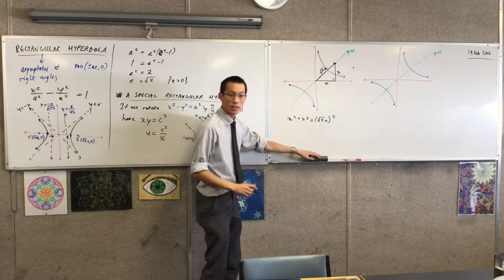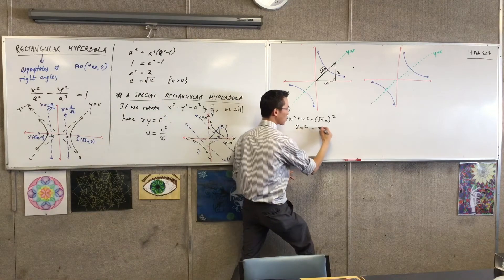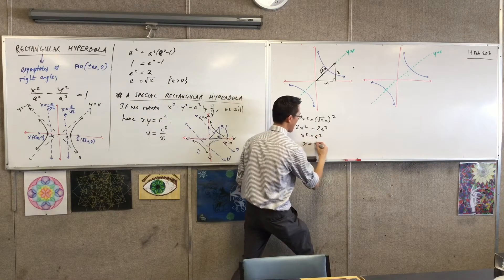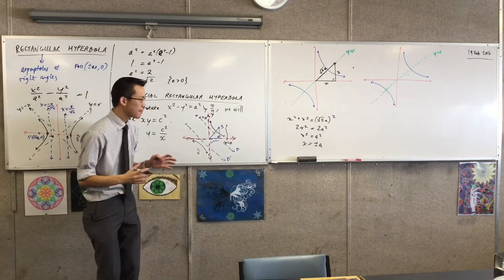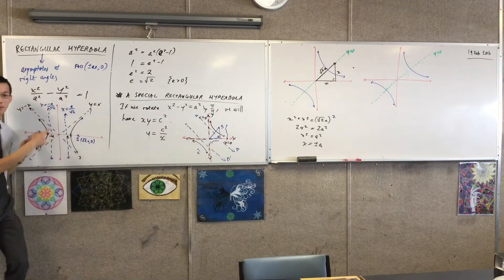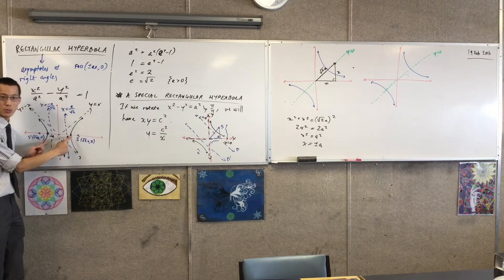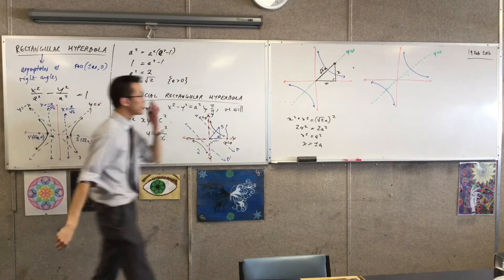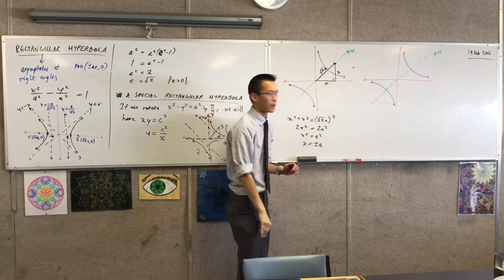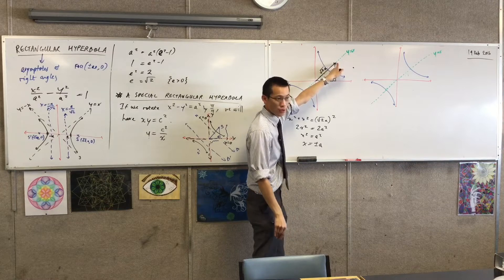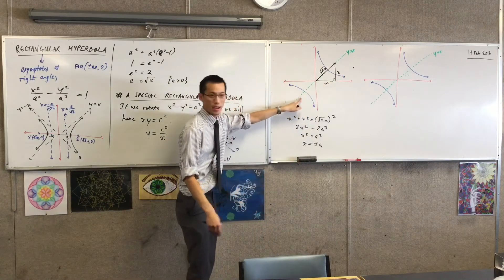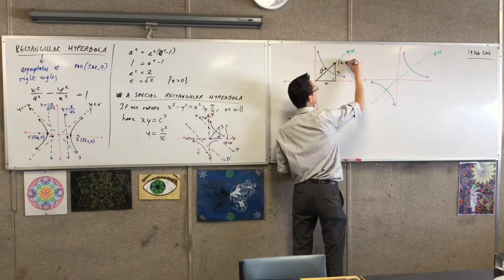It kind of falls out from here what the x value is. I've got 2x squared equals 2a squared, divide through, and I get this familiar value. Now, x equals plus or minus a was significant before but for a different reason — it's where the vertices were. When I've rotated around, this distance has been preserved, but it's no longer horizontally at the same point. So the focus is at — one of them will be at (a, a) because x and y are the same, and the other one will be over here at (-a, -a). So that's the focus.